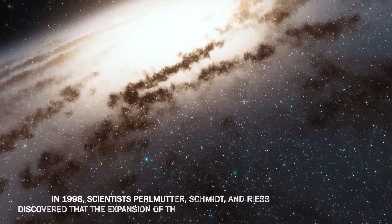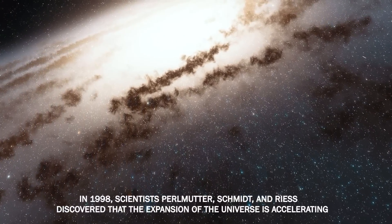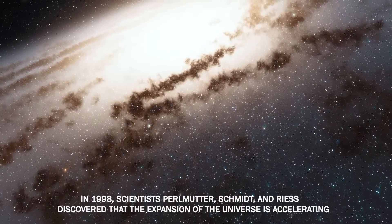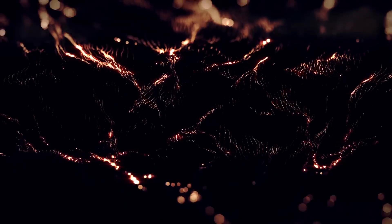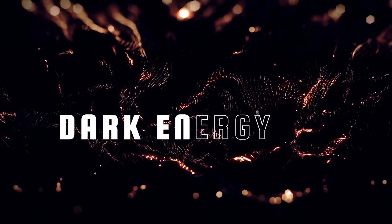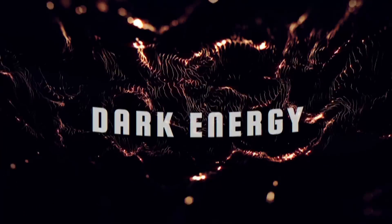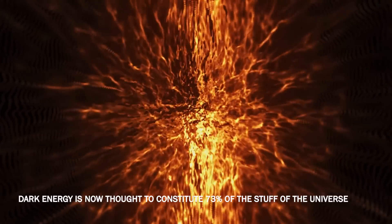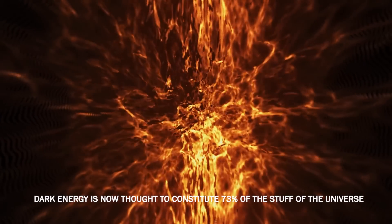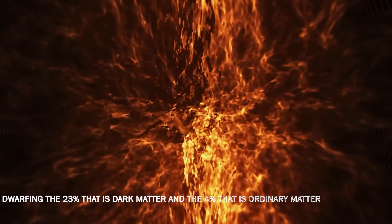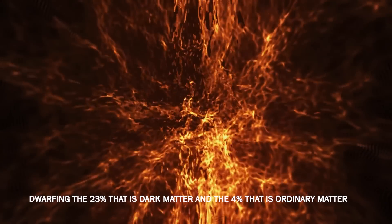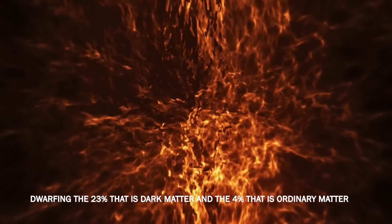In 1998, scientists Perlmutter, Schmidt, and Reiss discovered that the expansion of the universe is accelerating. Something is driving the acceleration, and that something is usually referred to as dark energy. This dark energy is now thought to constitute 73% of the stuff of the universe, dwarfing the 23% that is dark matter, and the 4% that is ordinary matter.